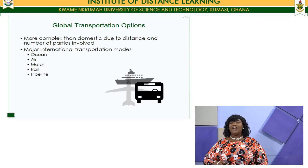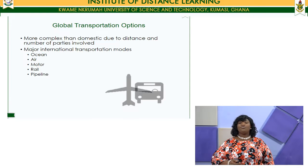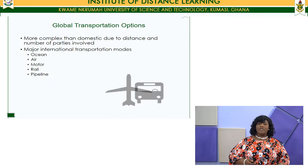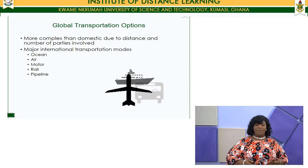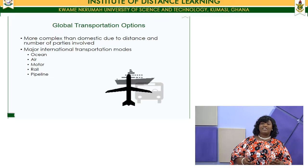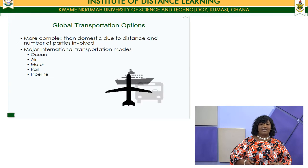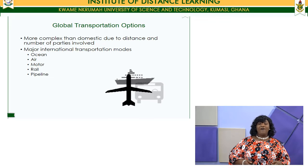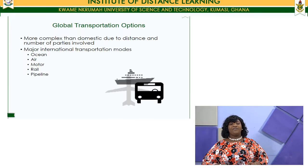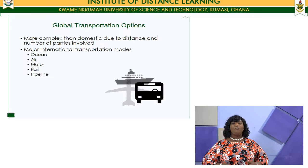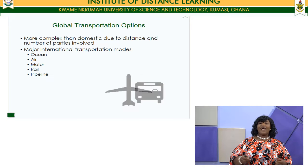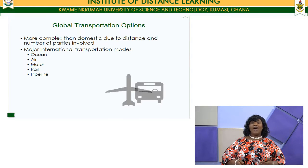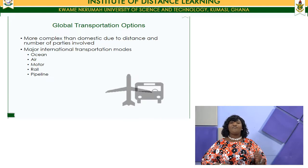Global transportation is more complex than domestic transportation due to distance and the number of parties involved. The major international transportation modes are ocean, air, motor, rail, and pipeline — though the pipeline is limited to liquids, gases, and slurry products. Among these five, the predominantly used ones for physical distribution are ocean, air, motor, and rail. The complexity lies in the longer geographical distances covered and the border issues you have to deal with as you move from one place to another.